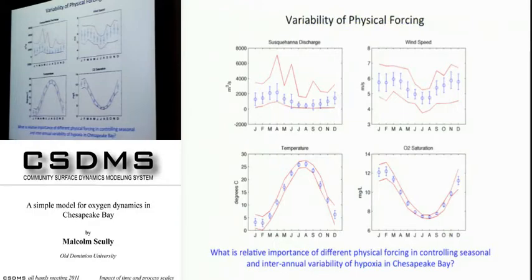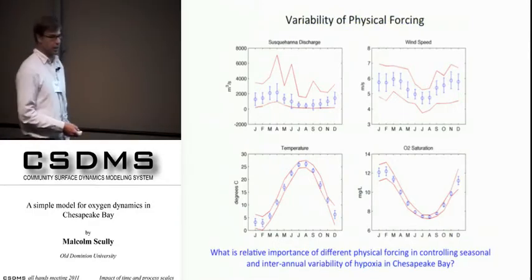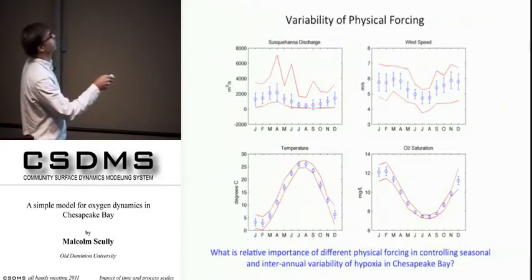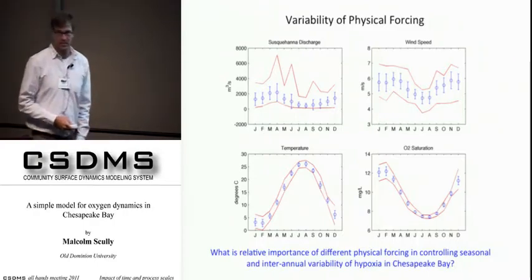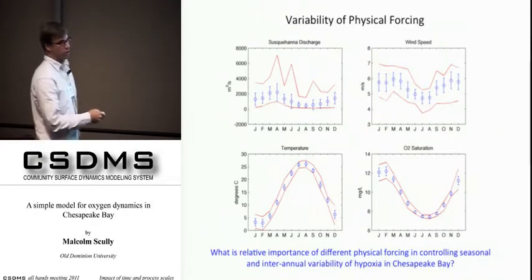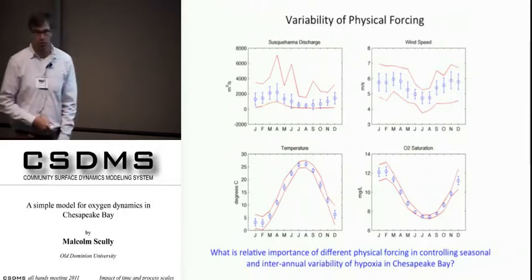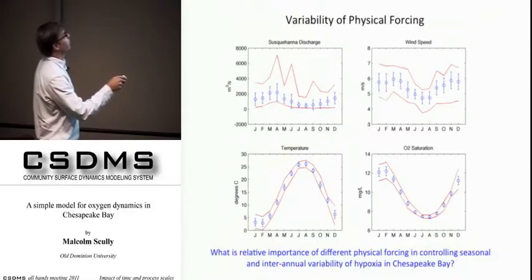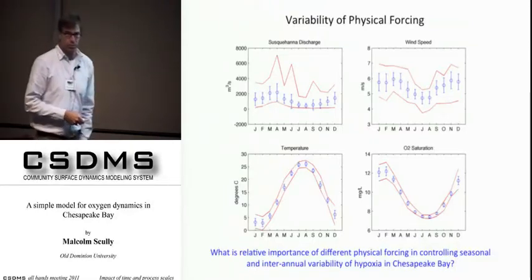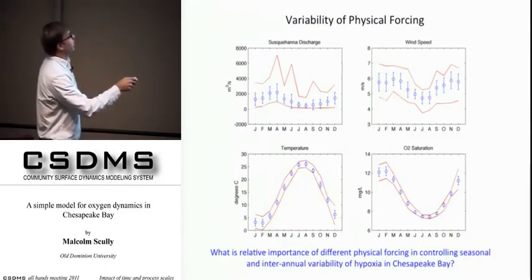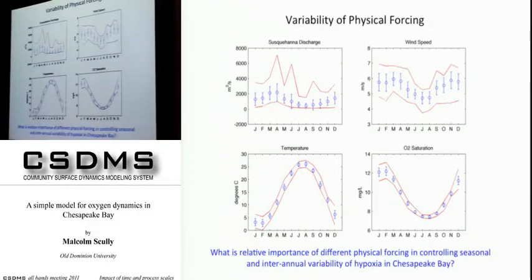Looking at the dominant physical processes and how they vary seasonally and interannually: this is the Susquehanna River discharge averaged monthly back to 1967 — the dominant source of buoyancy and freshwater. There's a clear seasonal cycle with a spring freshet that sets up stratification thought to play a role in limiting mixing. But there's a lot of interannual variability — we can have very high or very low river discharge — and river discharge is typically considered one of the most fundamental parameters contributing to this interannual variability.